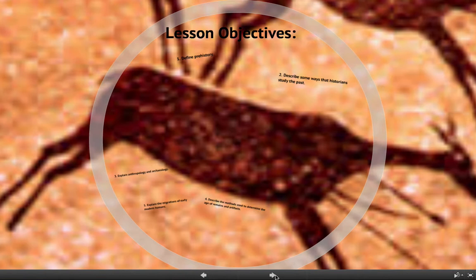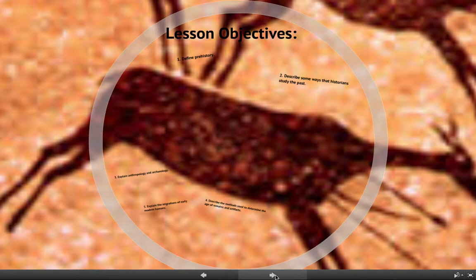So within this vodcast we have five lesson objectives. Basically what that means is these are the five things that you will be able to do, or should be able to do, when you are done watching this vodcast. Remember you can pause and rewind as the vodcast is playing if there's something that you don't understand or you missed and need to go back and look at again.